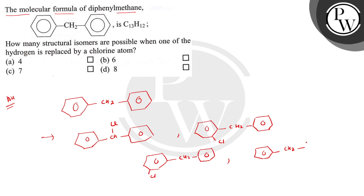So this is the last one: ortho, meta, para. So the number of isomers that is possible when one of the hydrogen is substituted with chlorine is one, two, three, and four.